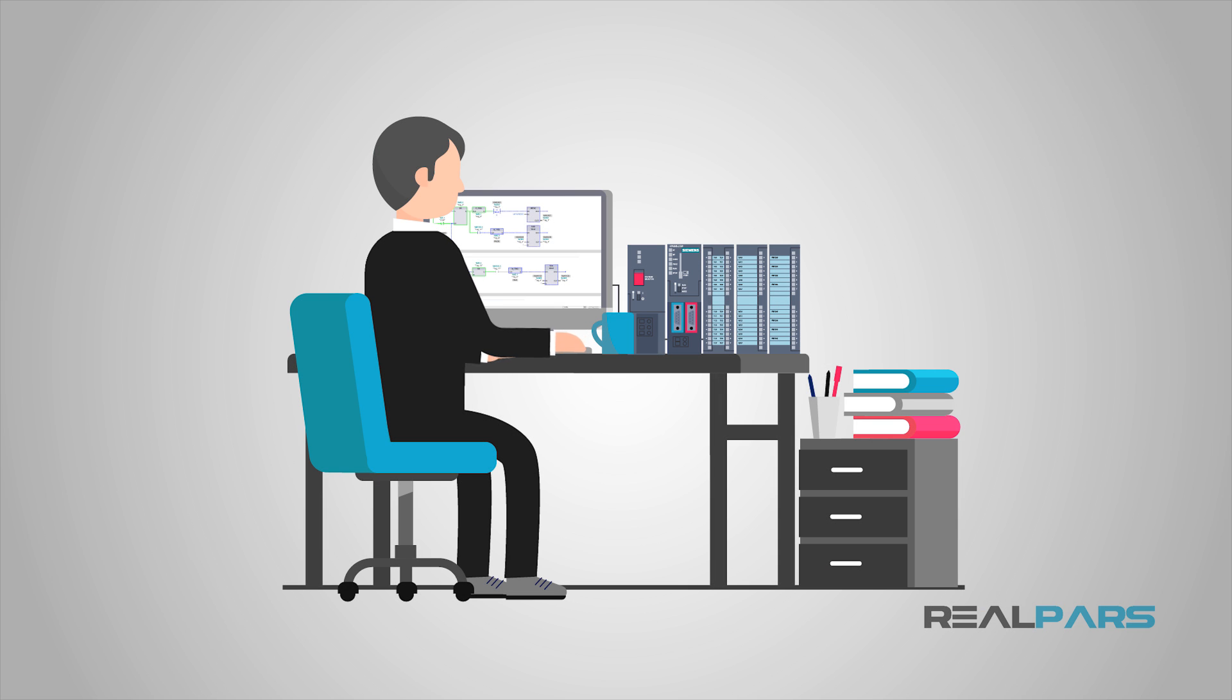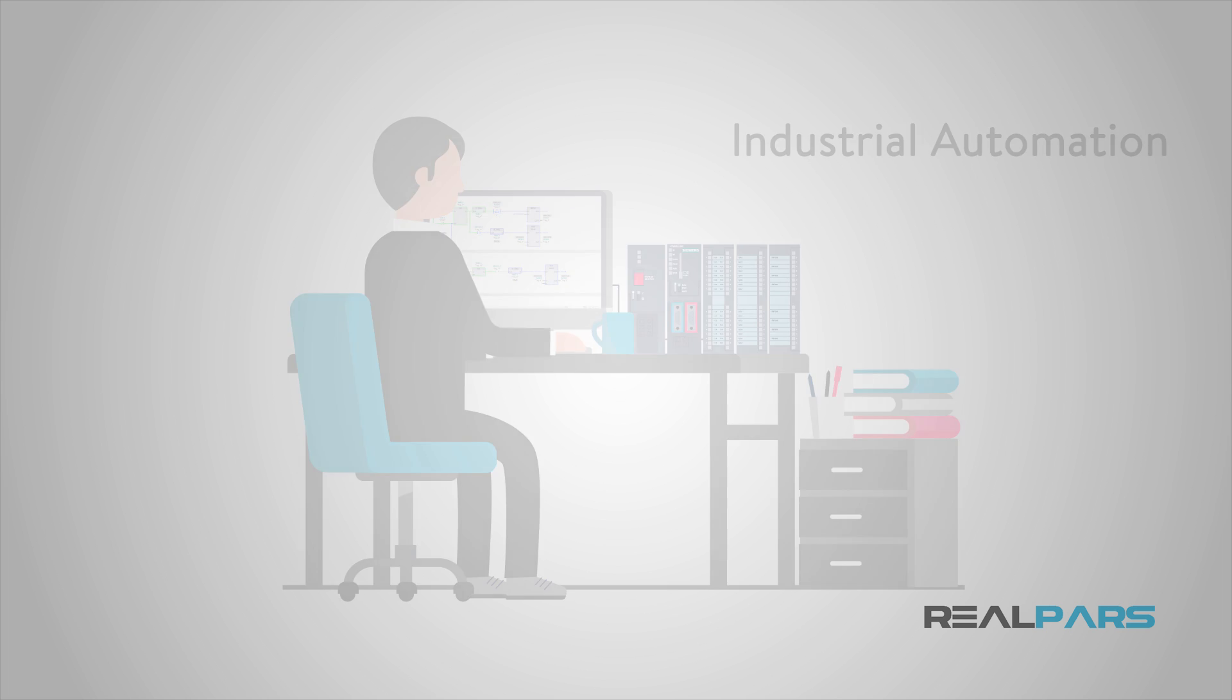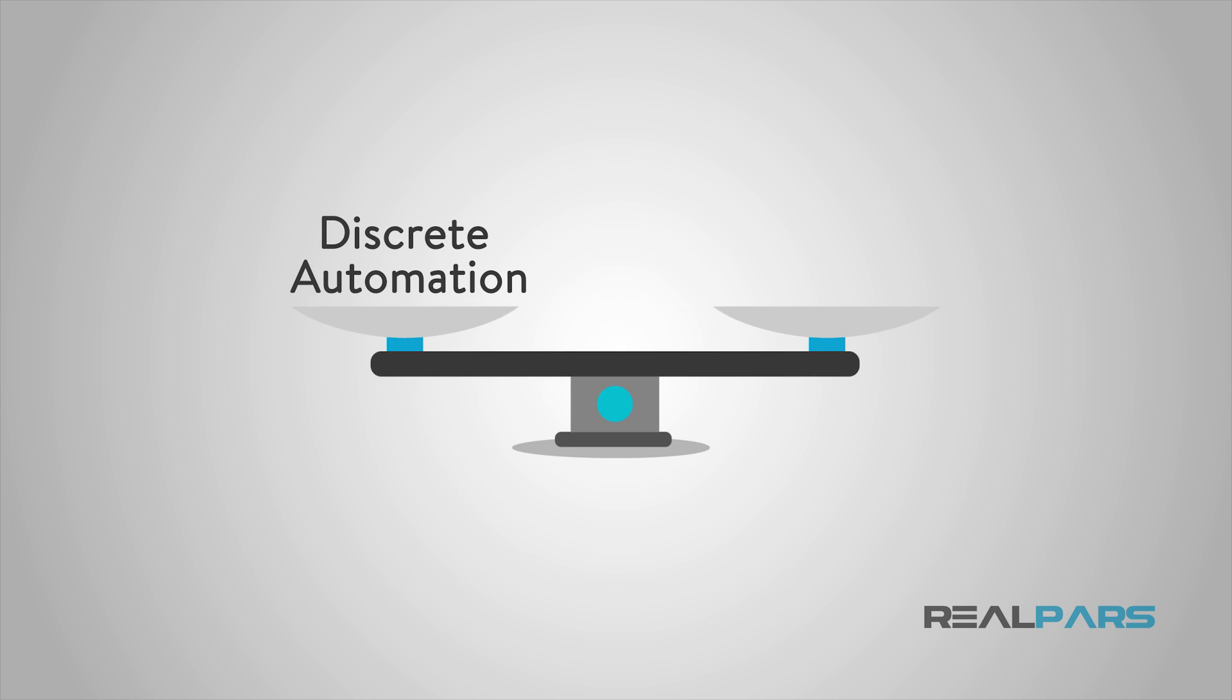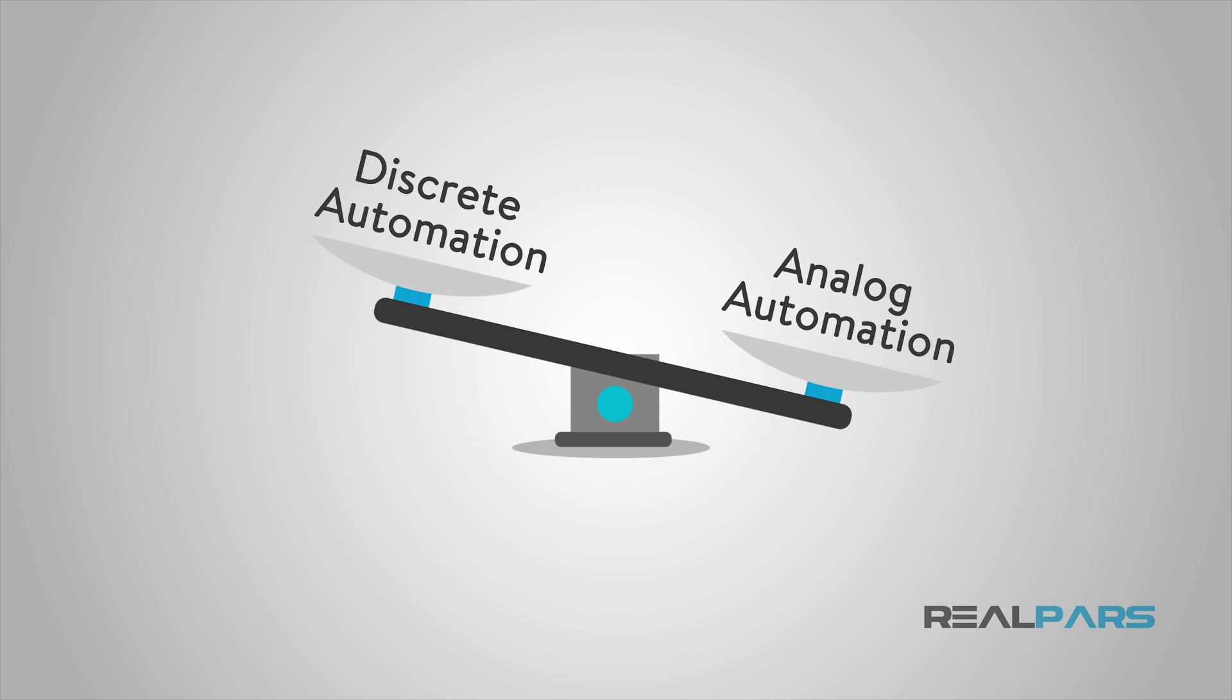In our PLC programming series, I have used the term industrial automation to encompass an industry in which PLC programmers are used. This is a general term used when discussing automation in general, but there are a couple of specific types of factory automation that we are going to discuss in the upcoming lessons. Those topics are going to cover discrete automation, analog automation, and the difference between the two.